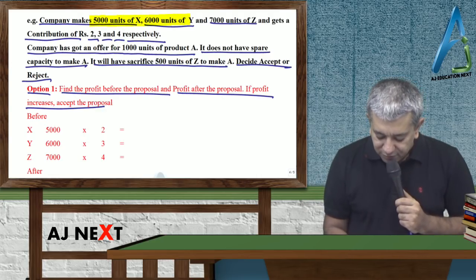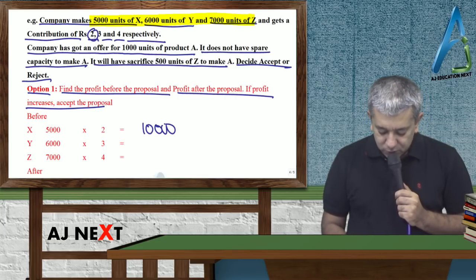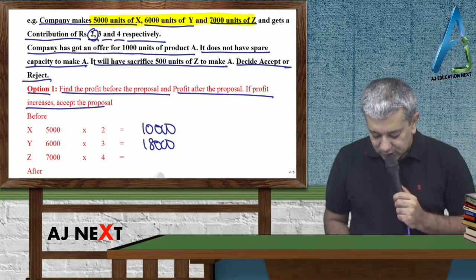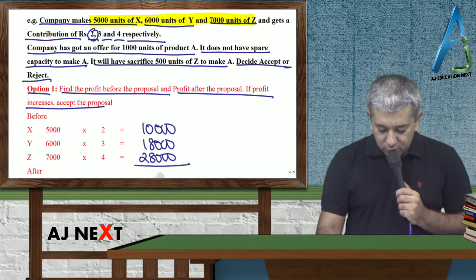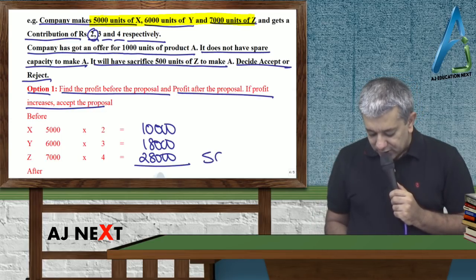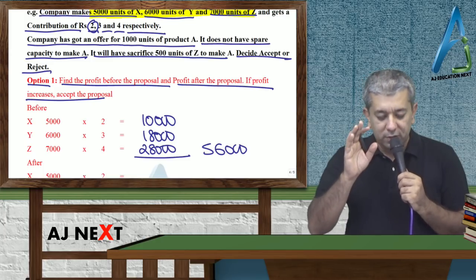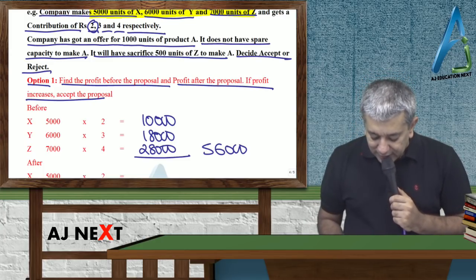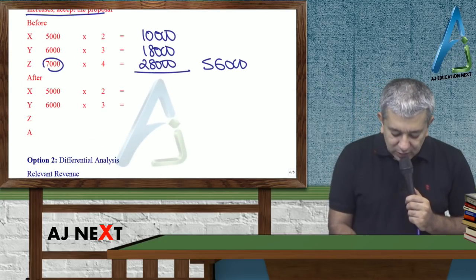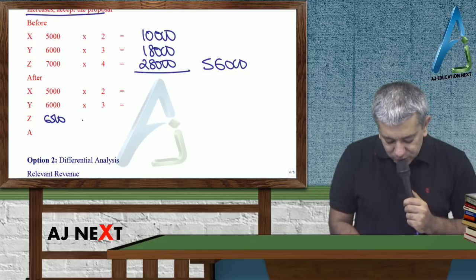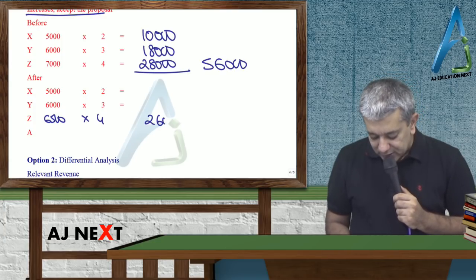Option one: find out the profit before the proposal, find out the profit after the proposal. If profit will increase, you accept. Toh pehle tum log kya banate the? 5000 units of X, har unit ki upar 2 milta tha, toh kitna rupees mil jaata tha? 10,000. 6000 at the rate of 3, kitna mil jaata tha? 18. 7000 at the rate of 4, kitna mil jaata tha? 28. Toh 28 plus 18 plus 10, kitna a jaega? 56,000.